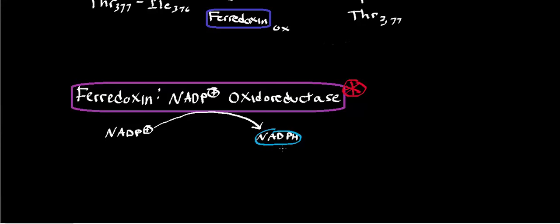Before we get into the mechanism of this enzyme and see how it works, I want to mention what the NADPH is for. The NADPH is going to be used to fuel something called the Calvin cycle. Without NADPH, the Calvin cycle will not be able to take place. Basically, what the Calvin cycle is for is synthesizing glucose. Part of the strategy of making glucose from the plant's perspective is to use NADPH to do the process.